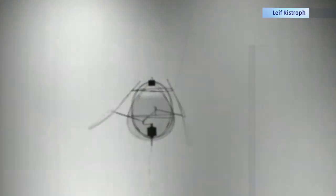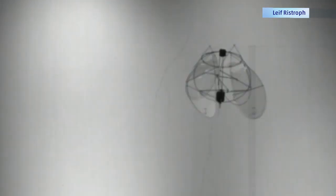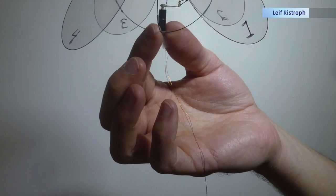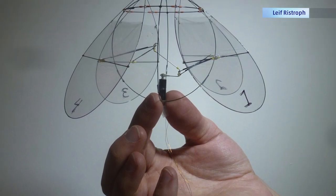Leif Ristroph at New York University glued together several tubes of carbon fiber to build a sphere with four wings attached to it that propels it like a jellyfish swims. At only eight centimeters in diameter, it's small enough to...